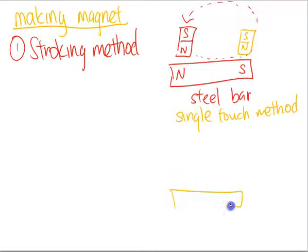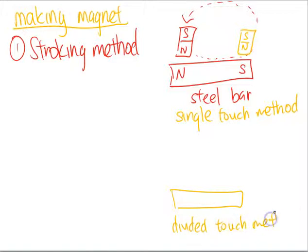We have the other one, which is called the divided touch method. This one is relatively similar, but in this case, we're going to have two different magnets moving in two different motions.